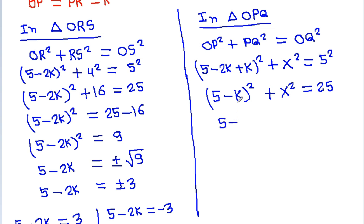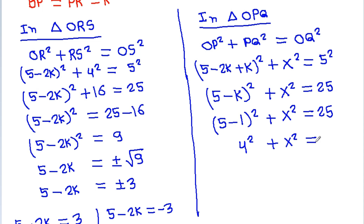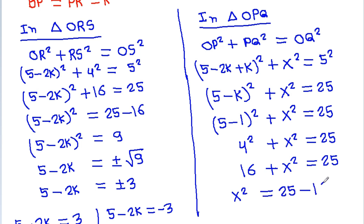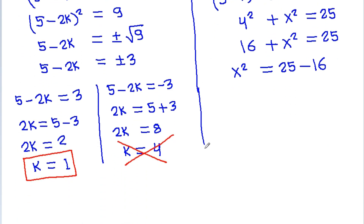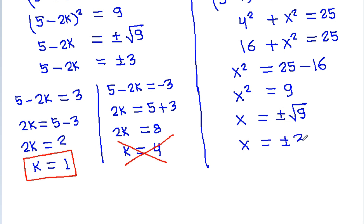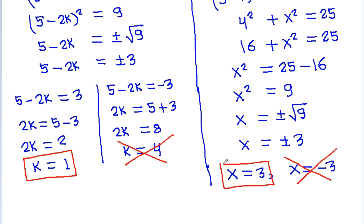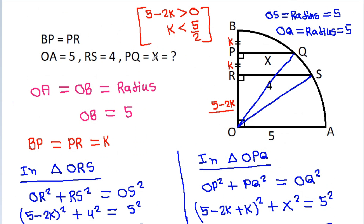Substituting K equals 1: (5 minus 1) squared plus X squared equals 25, so 4 squared plus X squared equals 25, giving 16 plus X squared equals 25. Therefore X squared equals 9, so X equals plus or minus 3. But X cannot be negative, so X is equal to 3.